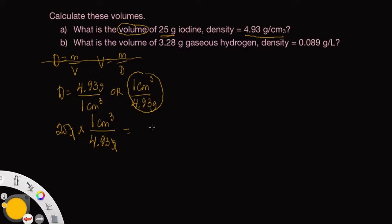So on my calculator, 25 divided by 4.93 is equal to 5.070993915. So let's see,